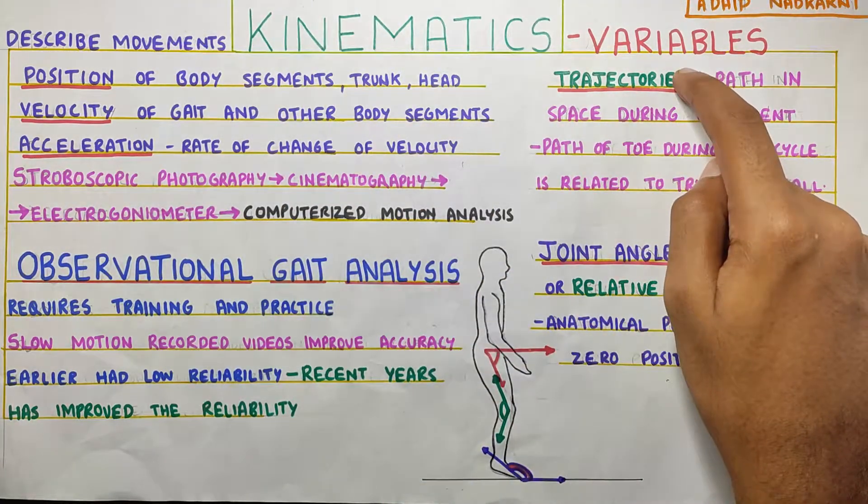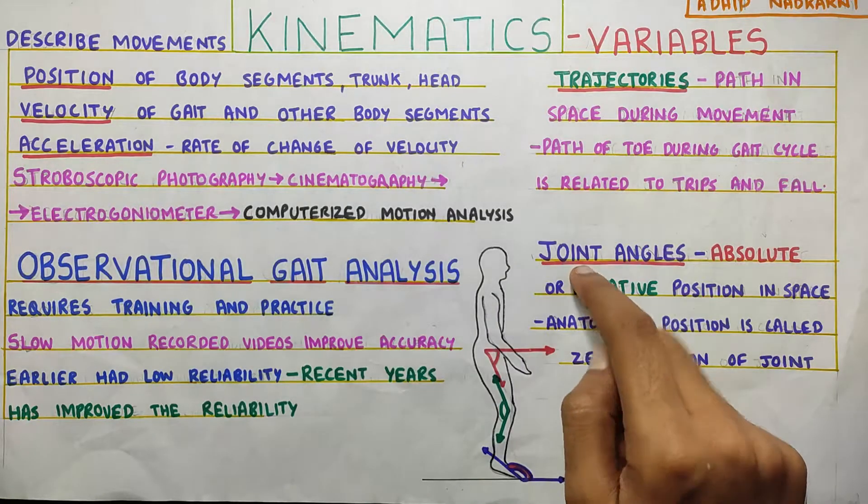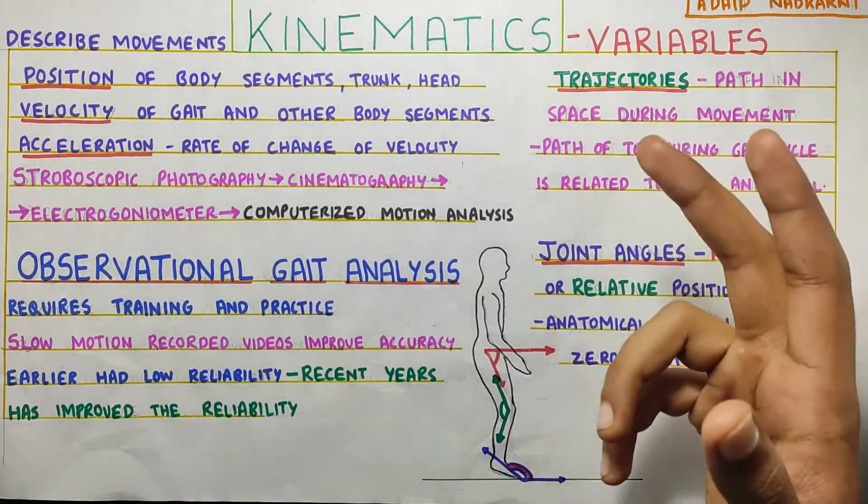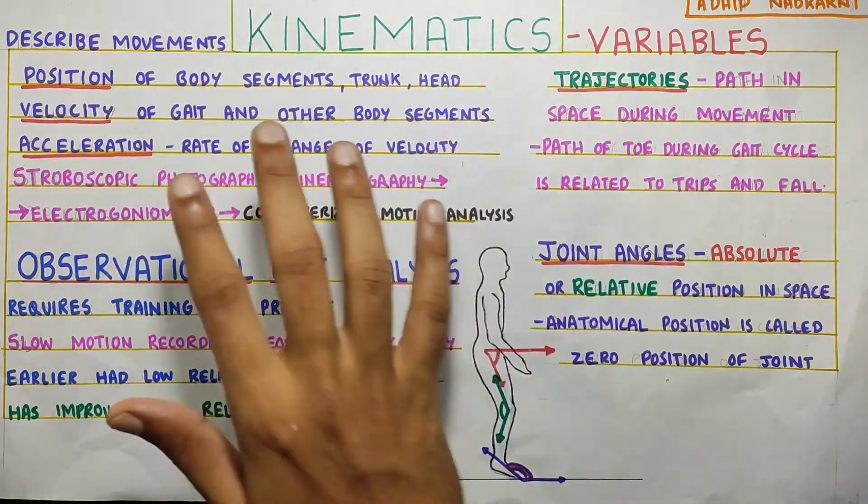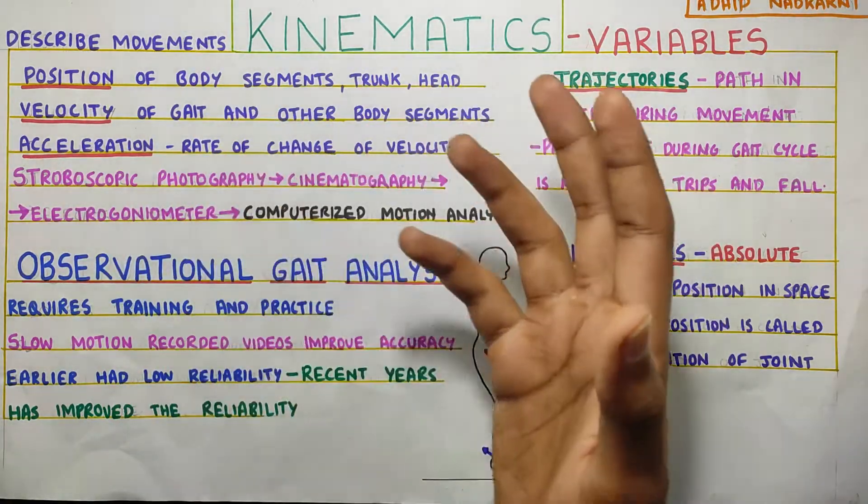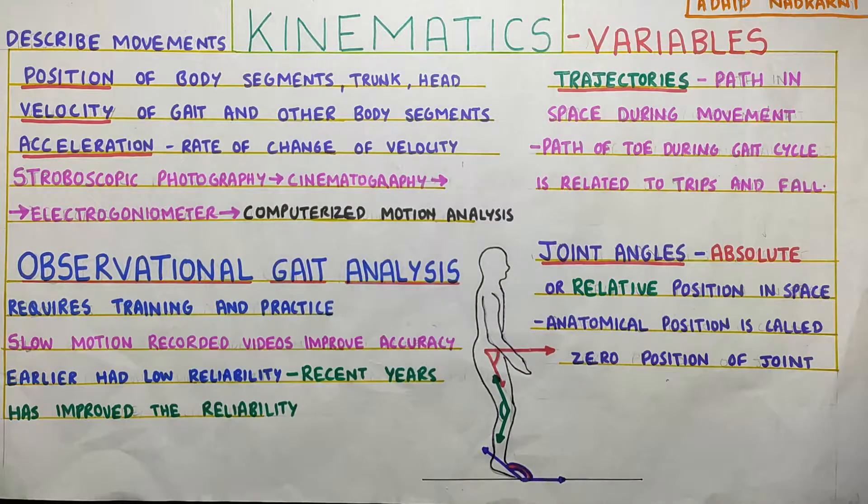So we talked about the trajectory. We talked about the joint angles, which are the two main ones. Apart from that, the velocity and acceleration of your gait and the position of your head, trunk and the body segments in space. So with that, we finish off this topic.